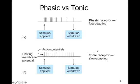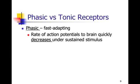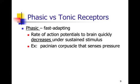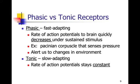Tonic receptors, on the other hand, are constant and proportional, so we call those slow adapting or non-adapting — an example would be pain. So we have phasic, fast adapting: the rate of action potentials will quickly decrease if the stimulus stays the same, sensing pressure for example. Our Pacinian corpuscle is a great example — you put on your clothes, and for the most part you don't feel them throughout the day because the pressure they're putting on you is fairly consistent. Phasic — fast adapting, alerting us to changes in the environment. Tonic — slow adapting, things like pain — the rate of action potentials will stay constant.